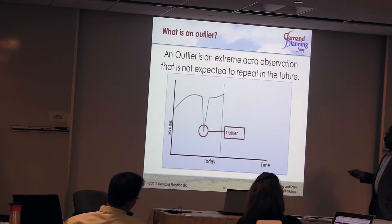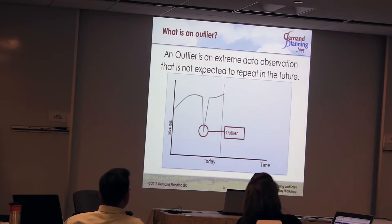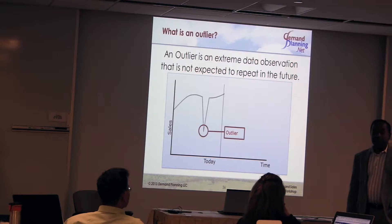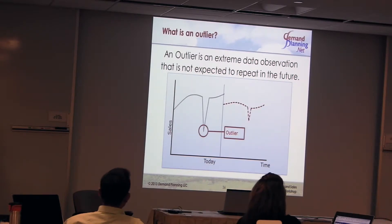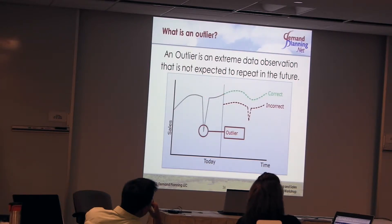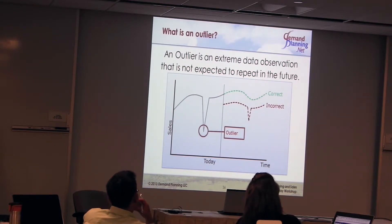If you leave the outlier in the data, the statistical modeling engine may say, hey, I do see a spike, so maybe I need to think about this as some type of spike that may happen — but not all the way. So the system may produce a forecast that looks inflated, and that's not what you want. If you correct this outlier and put the number back in the normal region, then you get a forecast that's a little bit better — it produces a seasonal dip, but not an extreme dip.